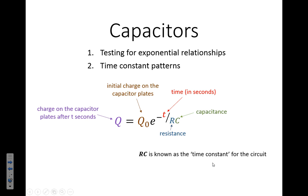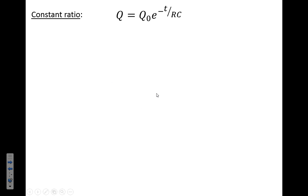We're going to look at two tests. The first test for exponential relationship is known as a constant ratio test.